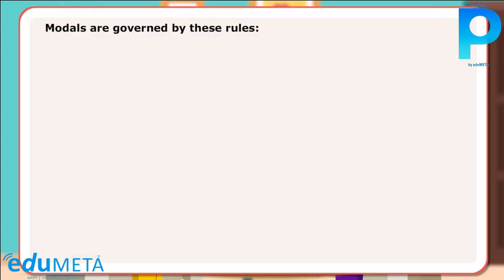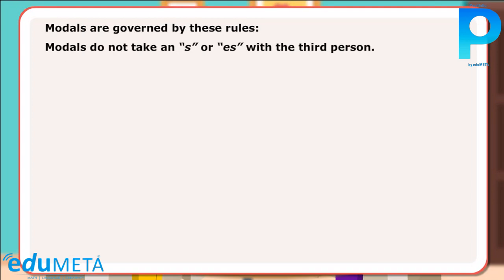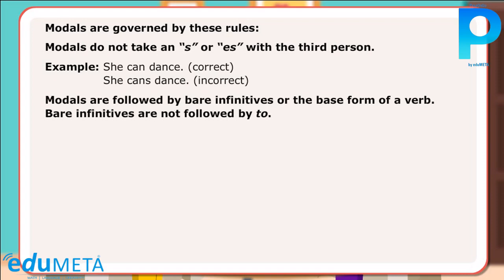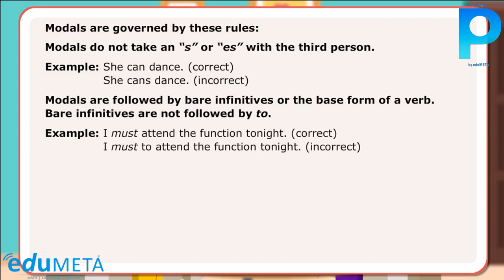Modals are governed by these rules. First, modals do not take an S or ES with the third person. Example: 'She can dance' — correct. 'She cans dance' — incorrect. Second, modals are followed by bare infinitives or the base form of a verb. Bare infinitives are not followed by 'to'. Example: 'I must attend the function tonight' — correct. 'I must to attend the function tonight' — incorrect.